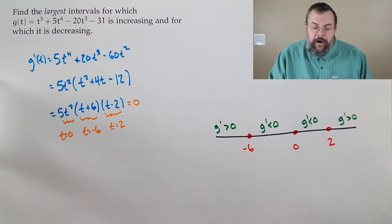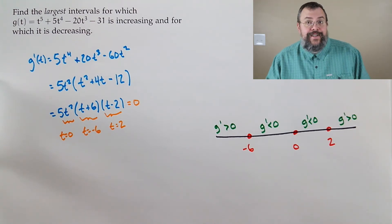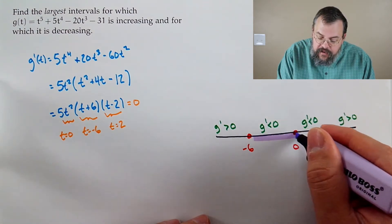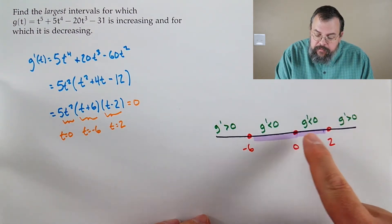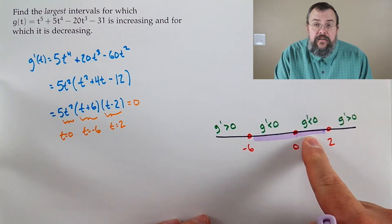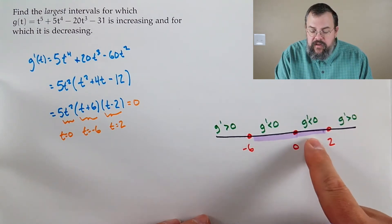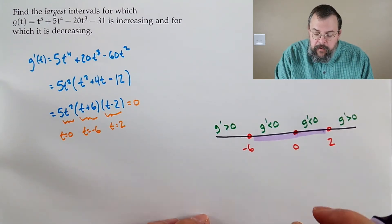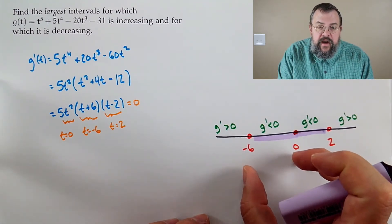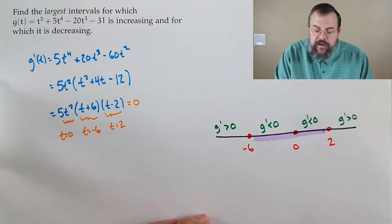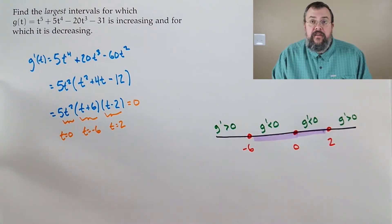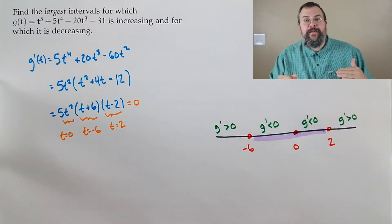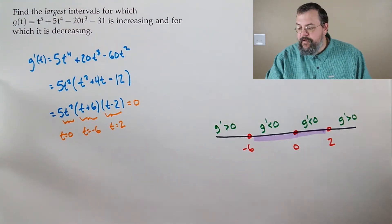Our goal was the largest intervals. Notice these two middle intervals both have a negative sign — we're decreasing and then decreasing again. Which means we don't have to think of negative 6 to 0 and 0 to 2 as separate pieces. We can think of it as all the way from negative 6 to 2, because at 0 we are continuous and can bridge the gap.